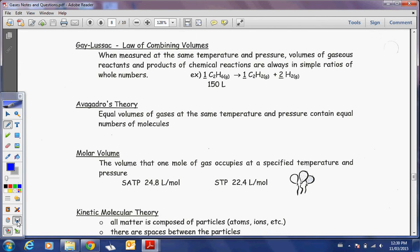So Avogadro's theory is different from Avogadro's number. Avogadro's number, of course, is that 6.02 times 10 to the power of 23 things in a mole, just like we say one dozen things is 12, so one mole of things is 6.02 times 10 to the power of 23, right? That's Avogadro's number.